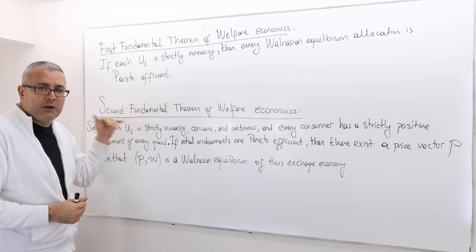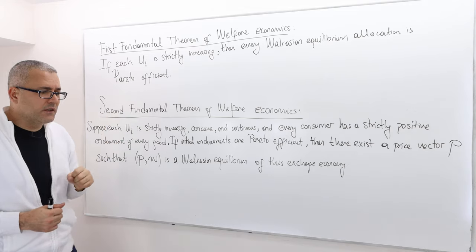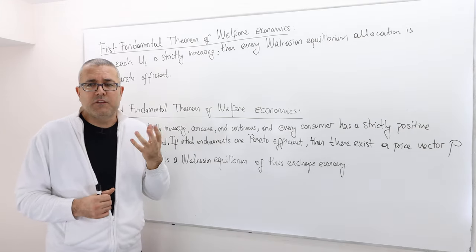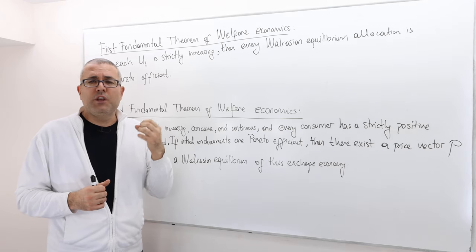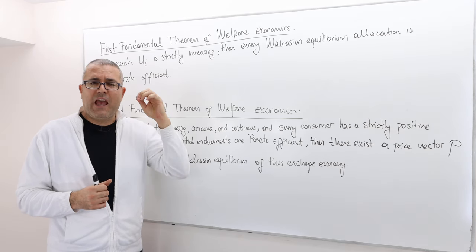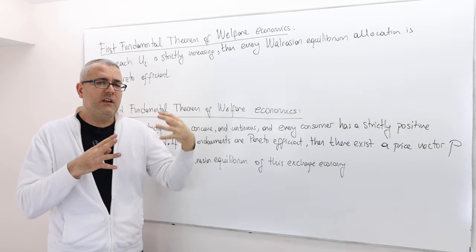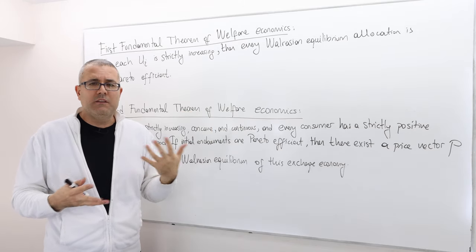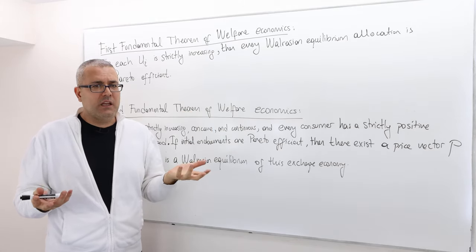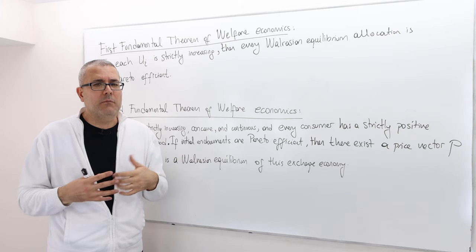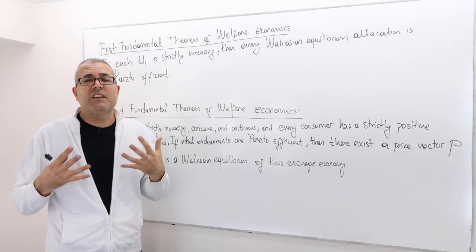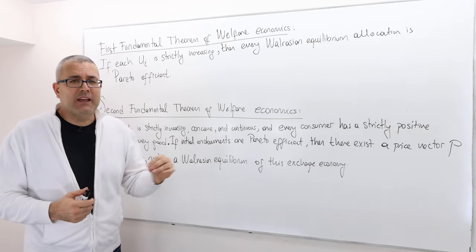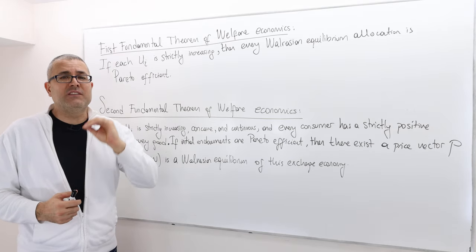Before jumping to the Second Fundamental Theorem of Welfare Economics, the question is: are we sure that every economy has a Walrasian equilibrium? Maybe in some economies there isn't any Walrasian equilibrium outcome. So when can we ensure that a Walrasian equilibrium outcome exists?